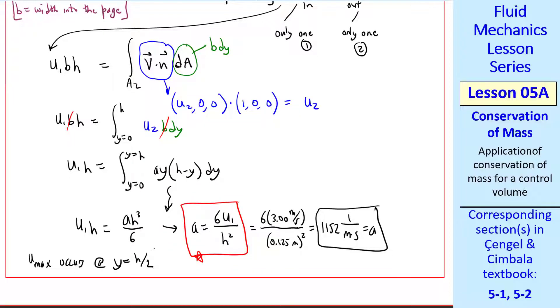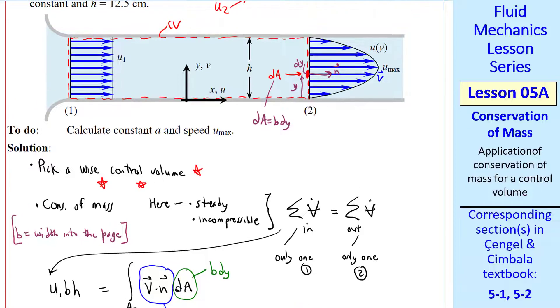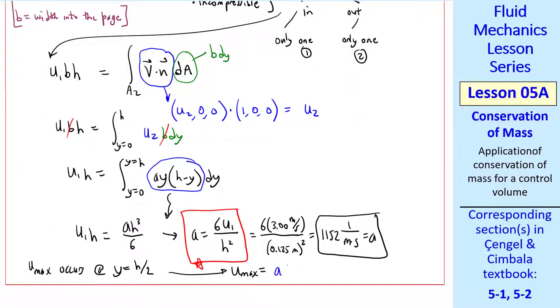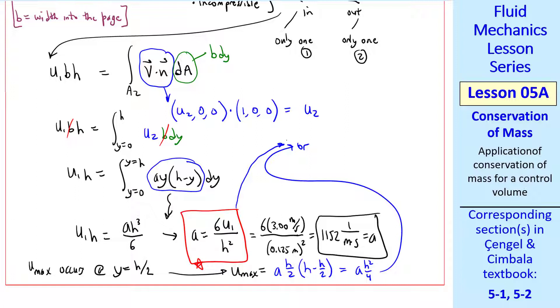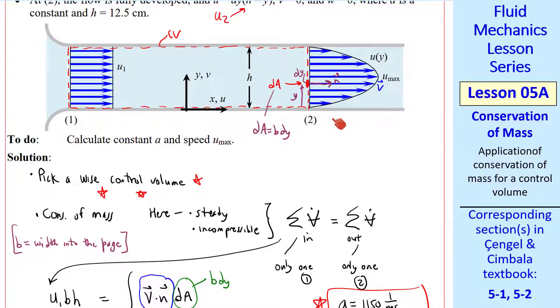U max occurs at Y equal H over 2. We can see that from our diagram. U max is right at the center, halfway upward Y equal H over 2. Using this equation again, U max is A times Y, which is H over 2, times H minus H over 2, which becomes AH squared over 4. If you plug in this expression for A and do a little algebra, you'll find that U max is 3U1 over 2. Our final answers to three significant digits are A equal 1151 over meter second, and U max is 4.50 meters per second.